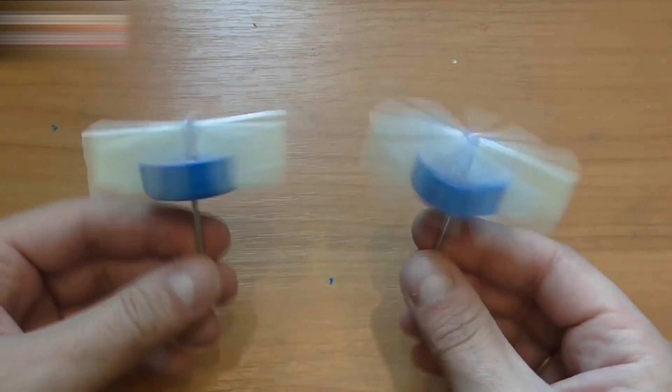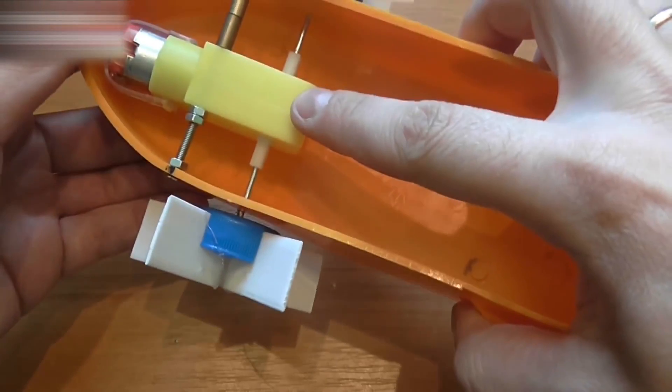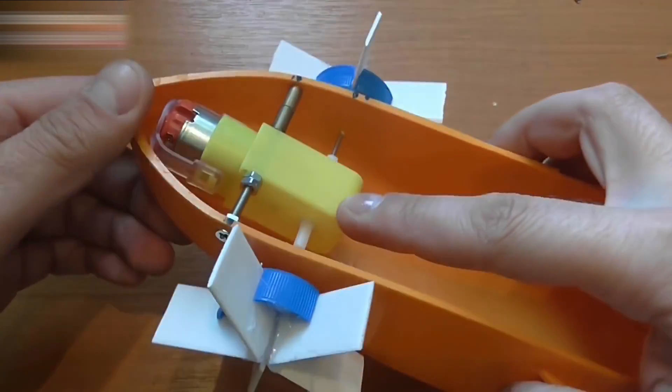The propellers should look like this. Place them on a boat like this. Fasten the motor with a three millimeter screw.